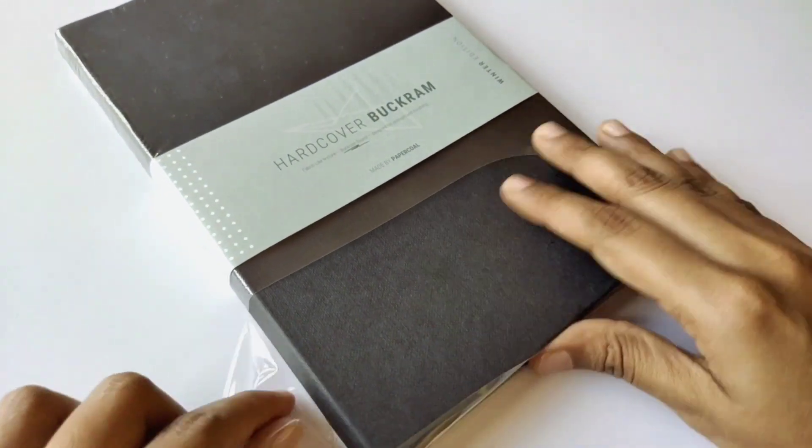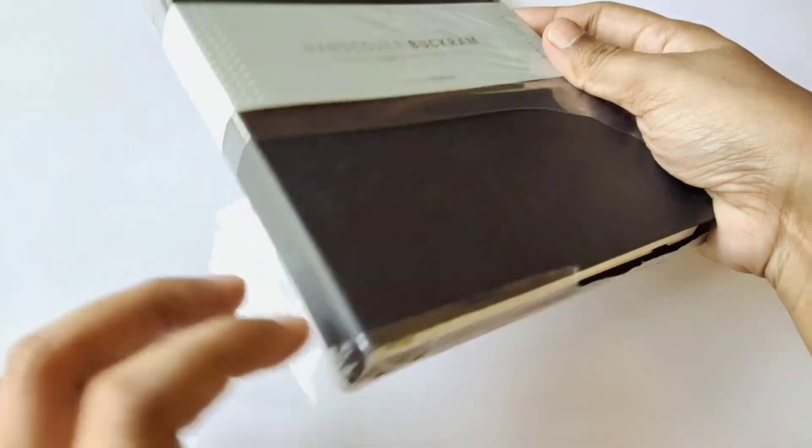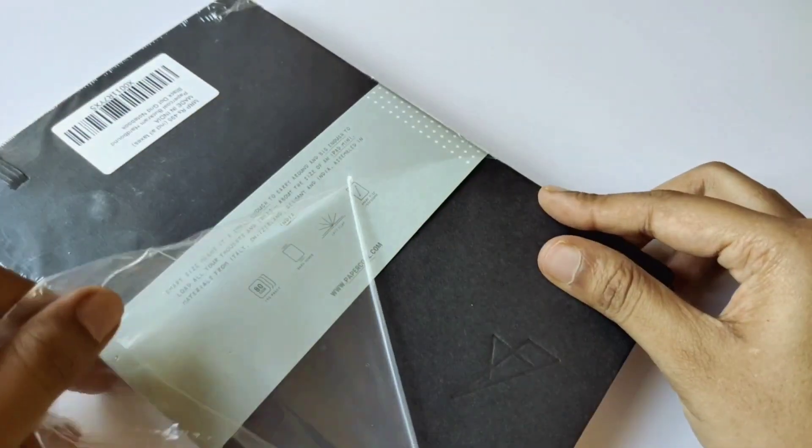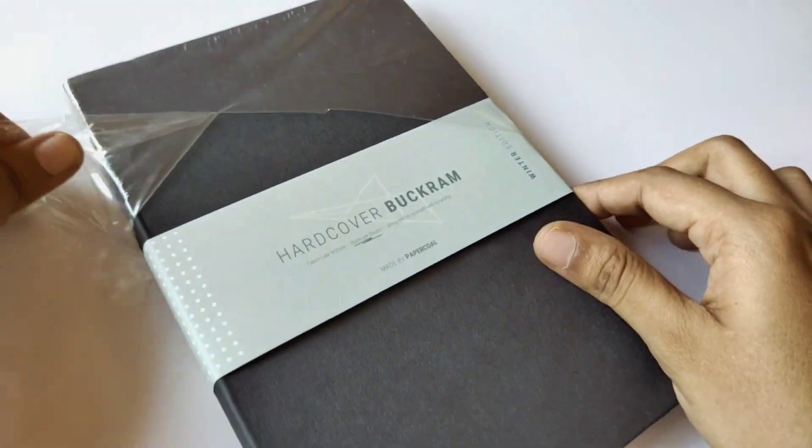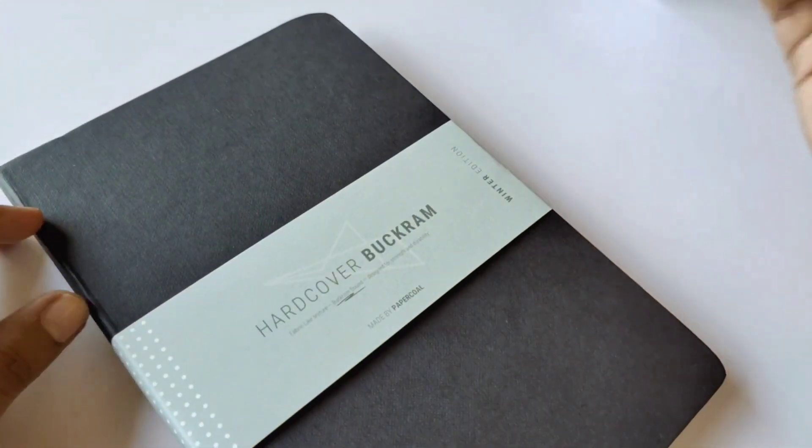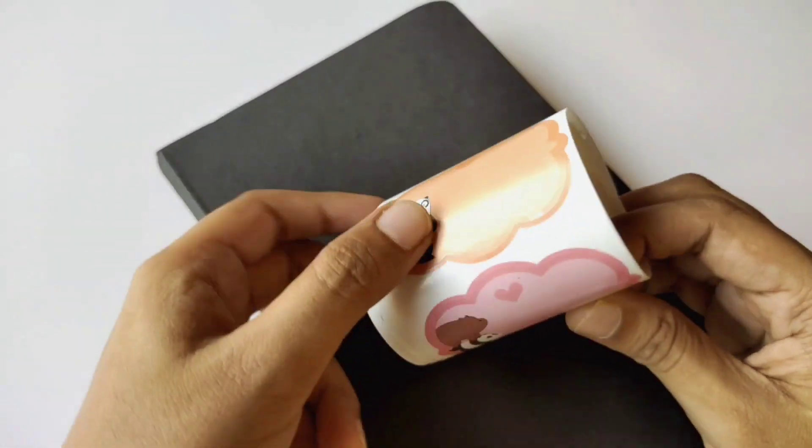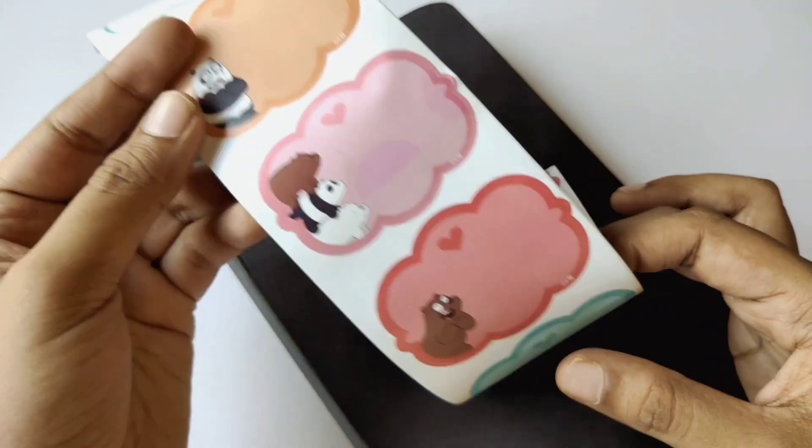This is a standard hardcover journal from Paper Call company. This is a dotted grid notebook with almost 200 pages. On this cover I want to decorate a little bit and name the diary so that it would be like I'm talking to a friend.